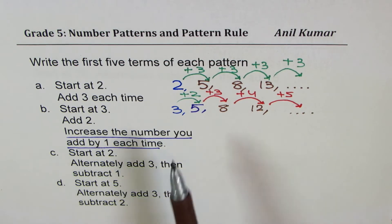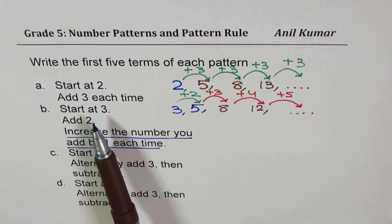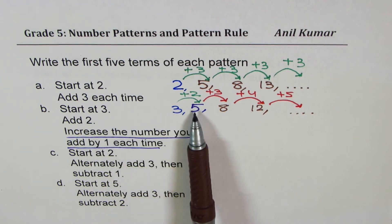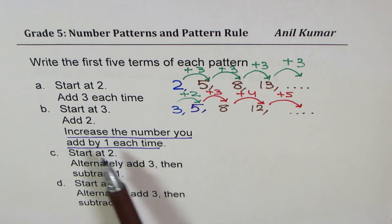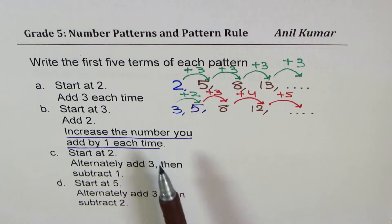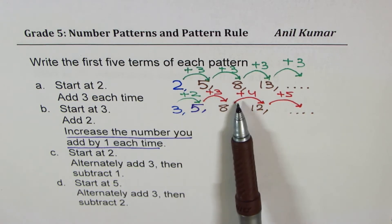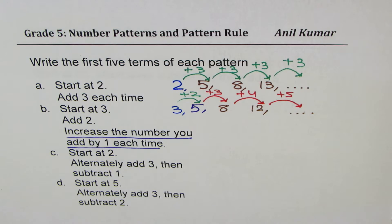So start at three, add two, increase the number you add by one each time. So plus one means next you add three, then add four, add five, add six and so on.